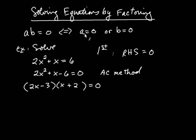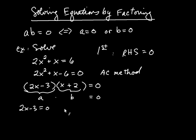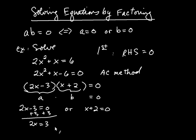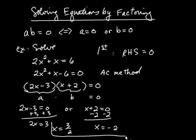We basically have a times b equals zero. Then you draw the conclusion that either a equals zero or b equals zero. So 2x minus 3 is a, and x plus 2 is b. That means either 2x minus 3 equals zero — adding 3 to both sides gives 2x equals 3, so x equals 3/2 — or x plus 2 equals zero, so subtracting 2 gives x equals negative 2. Either one of these is a solution: 3/2 or negative 2.